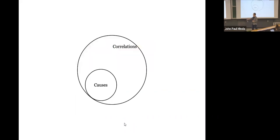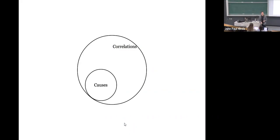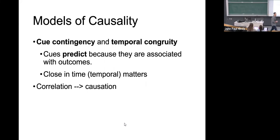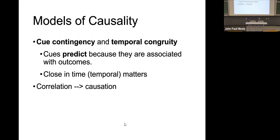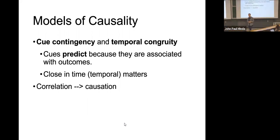Most causal relationships have a correlational structure, but how do we tease them apart more usefully? Let's talk about models of causality, because most of us really want to know what causes something — whether it's what causes you to do well on an exam or what causes certain social behaviors. Two key tools are Q contingency and temporal congruity. These two things can tell us a lot about causal structure.